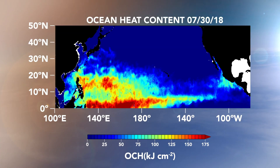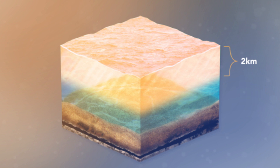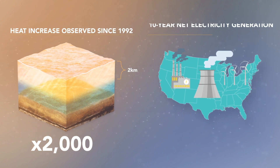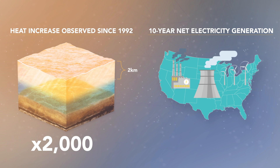We have seen that just like the atmosphere, ocean circulations move heat towards the poles. However, because the oceans have a large heat capacity and are more dense than air, the currents move more slowly and store a lot of heat. The ocean heat content tells us how much heat is stored in the oceans. Just like the global atmospheric temperature, the ocean heat content has been increasing. The increase in ocean heat content observed since 1992 in the upper 2 kilometers of the ocean is about 2,000 times the total net generation of electricity by U.S. utility companies in the past decade. That is a lot of energy.